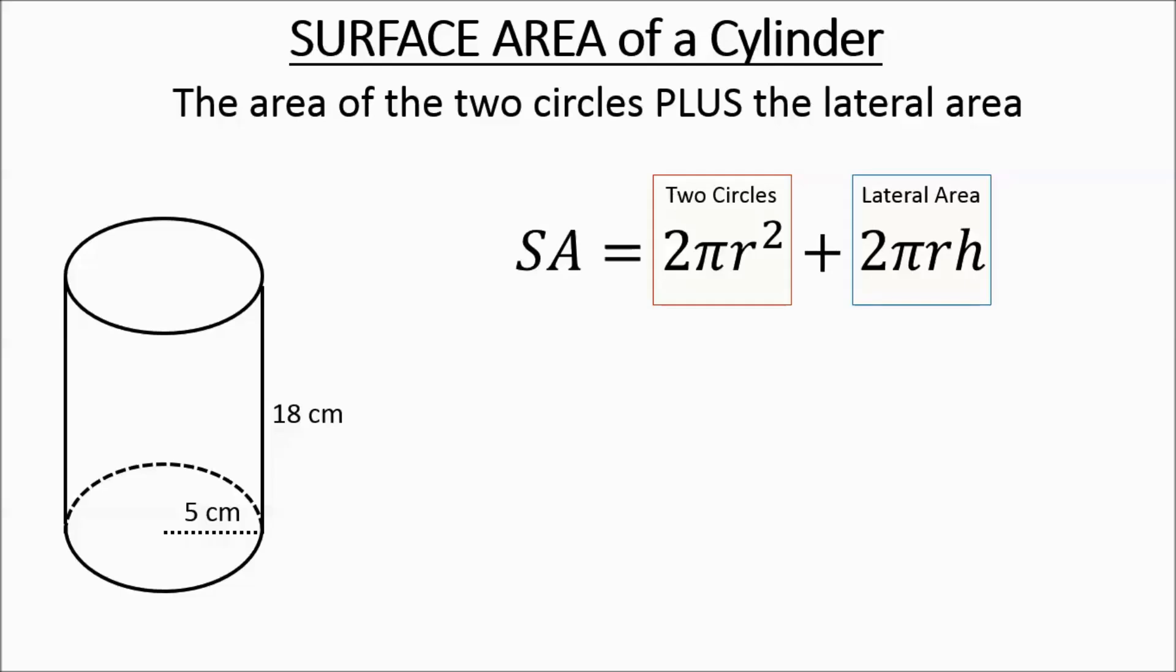Sometimes you'll get word problems when they're asking about something like soup cans, and they're talking about the paper to cover the can that goes around. They're basically asking for the lateral area.